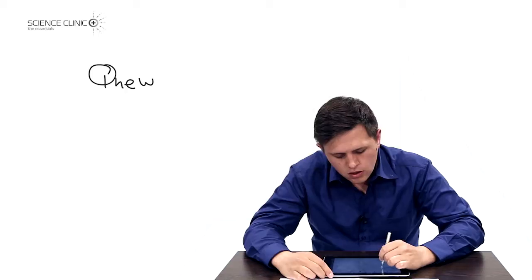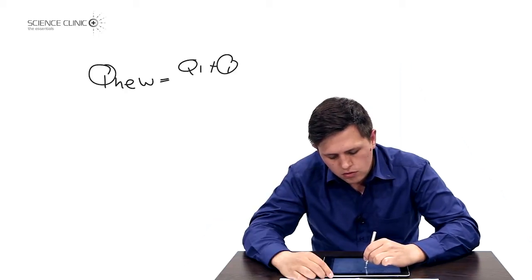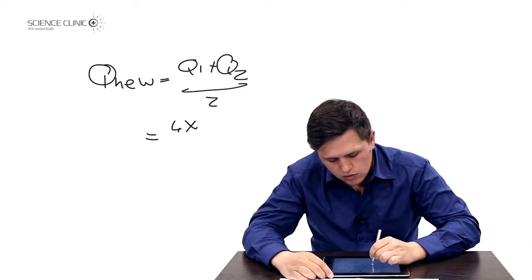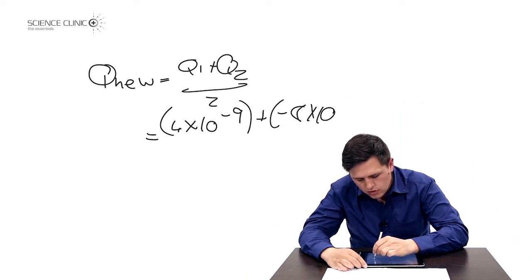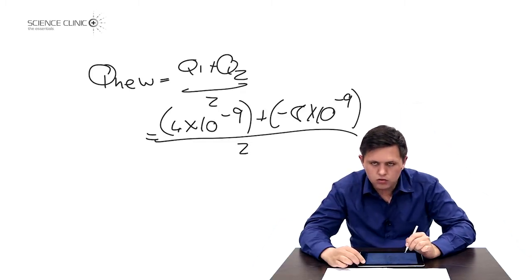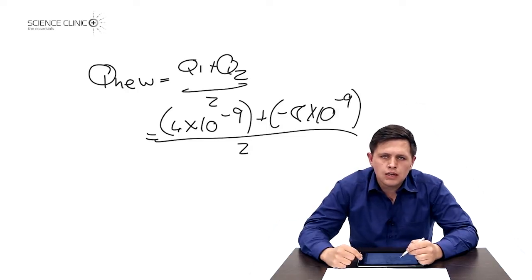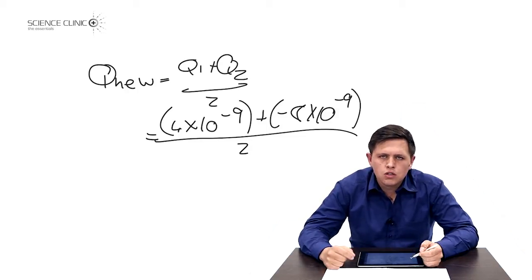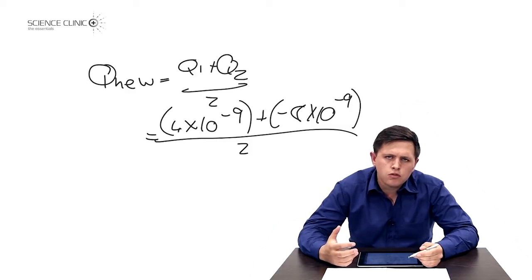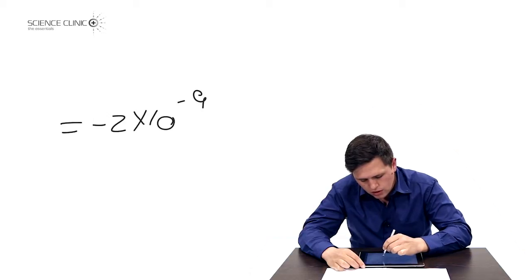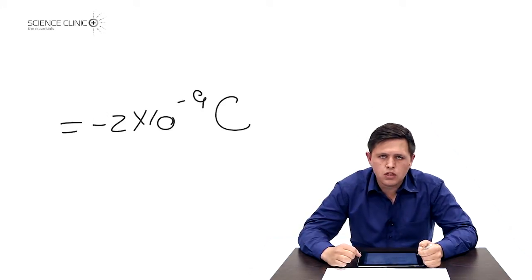The new charge Q_new equals (Q1 + Q2) / 2, which is (4×10⁻⁹ + (−8×10⁻⁹)) / 2. You can use nanocoulombs here, but it's good practice to convert to base units so you remember to do conversions and the value is ready for later use. The answer is negative 2×10⁻⁹ coulombs — always include your units, it's very important.